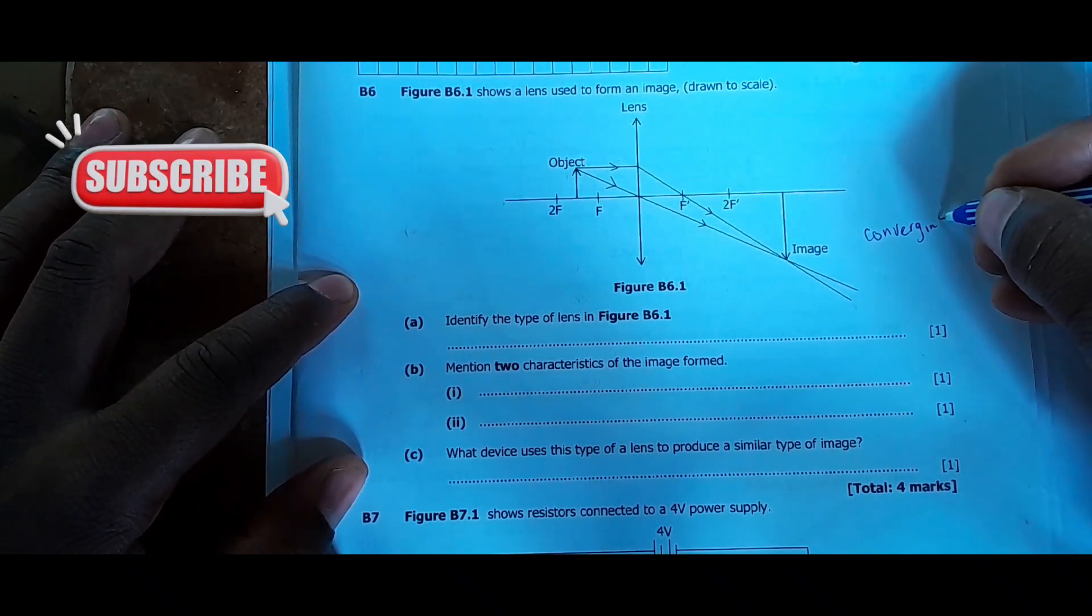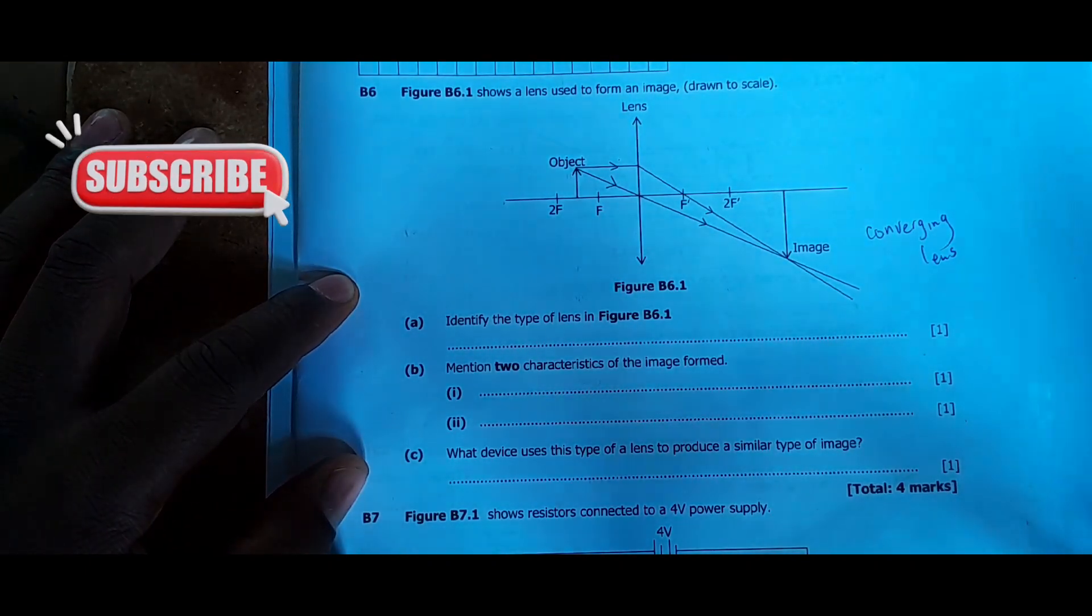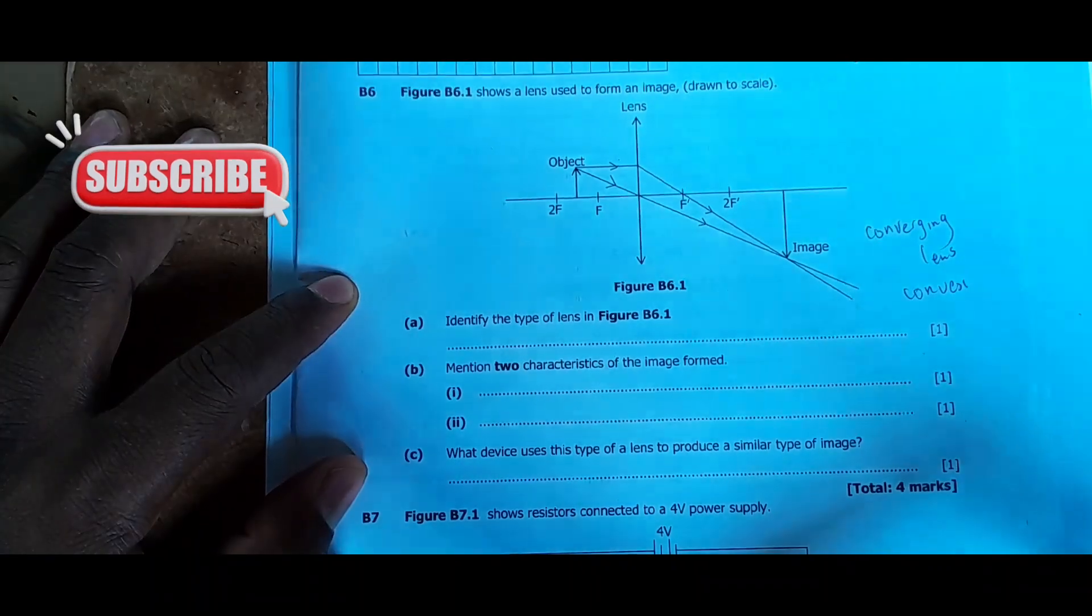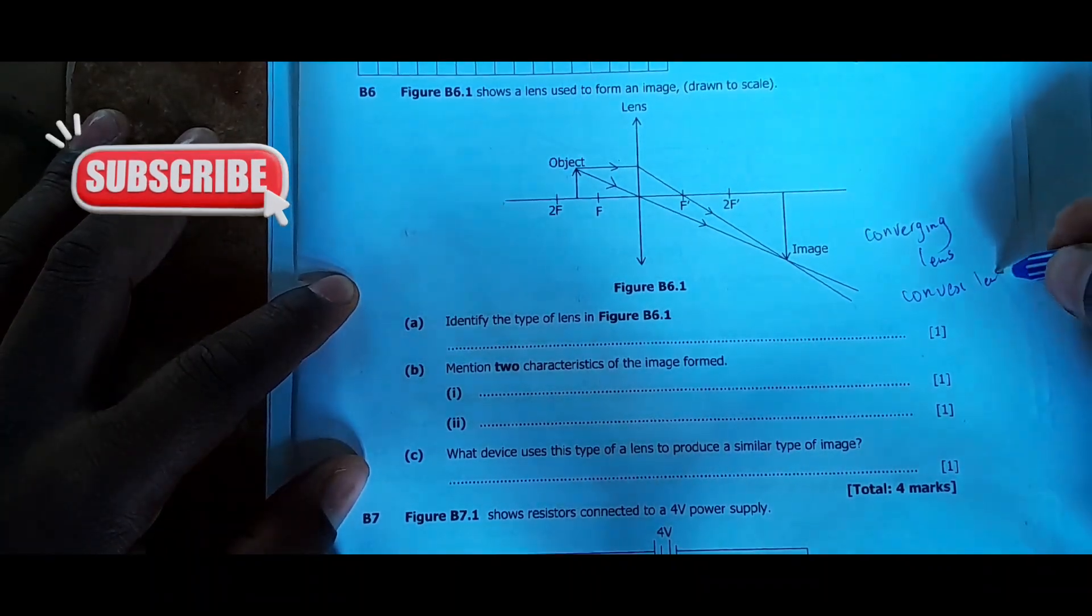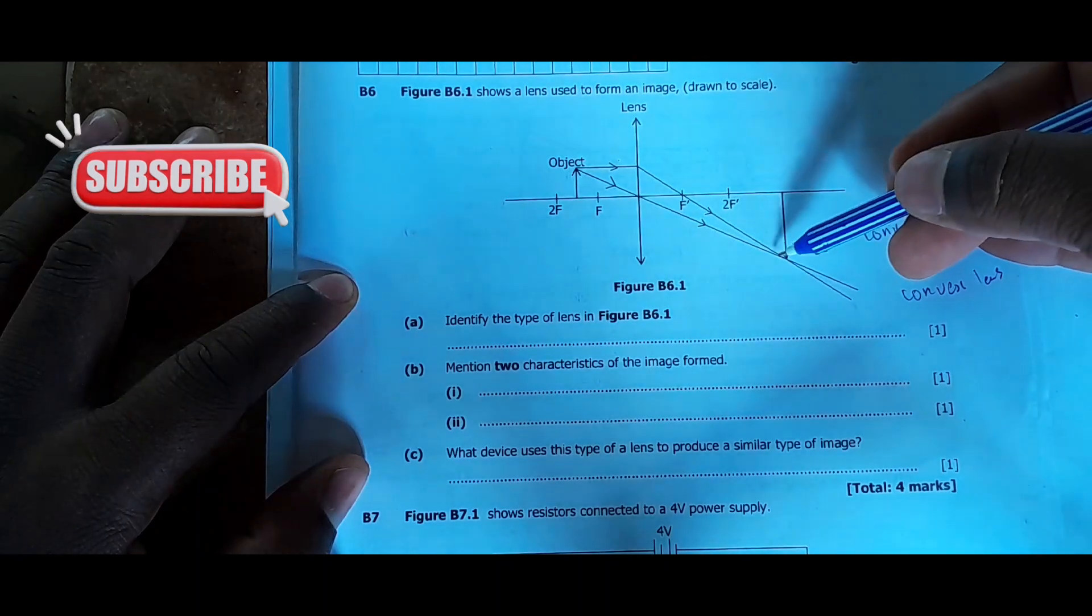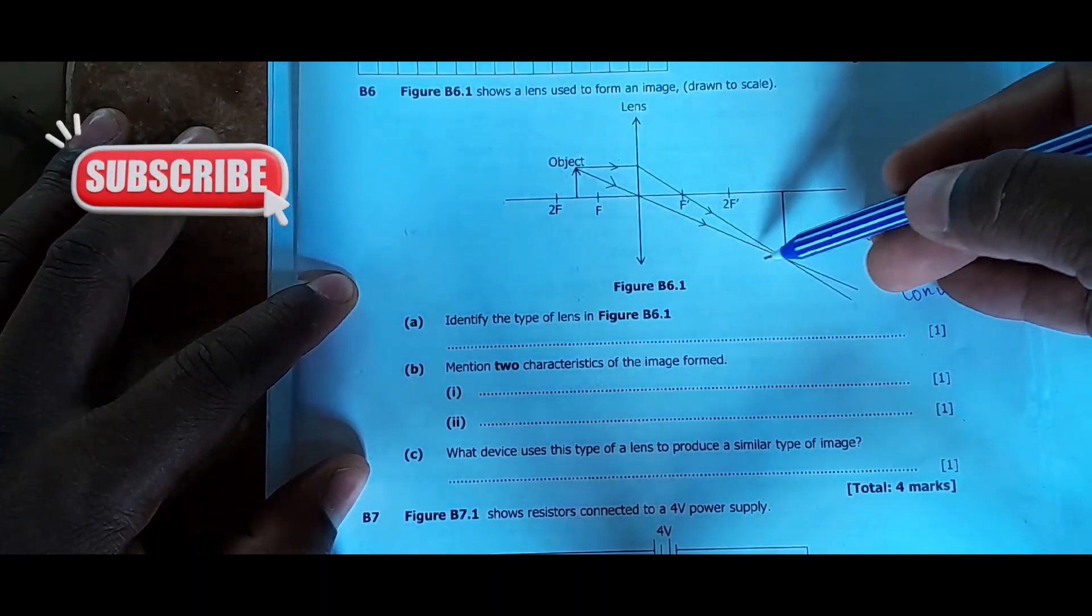Converging lens. We can also say it's a convex lens. So if you don't say it's a convex lens, you can say it's a converging lens, it's one and the same. As long as rays are meeting - where are they meeting from? They're meeting from here, there's this ray, there's that ray, and they're meeting at this point.